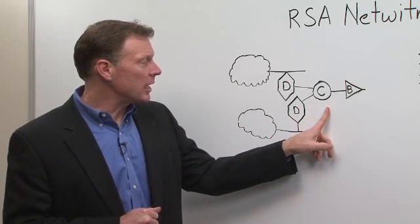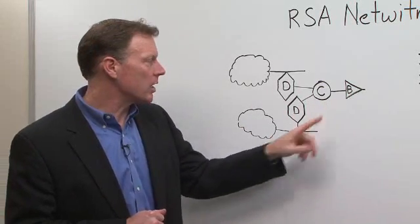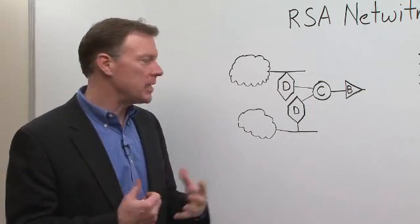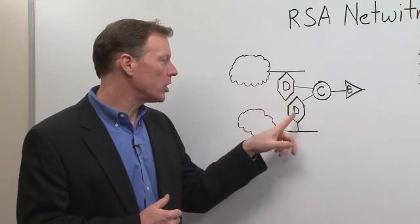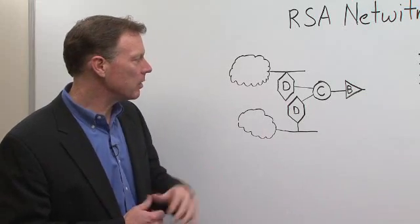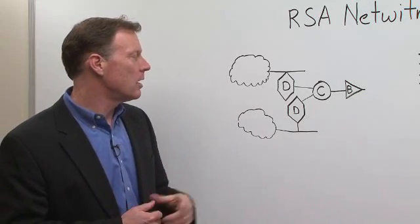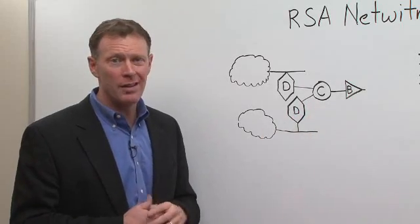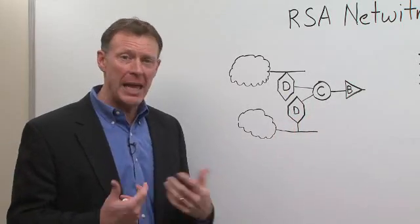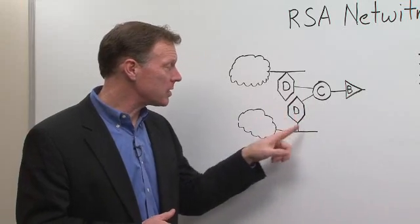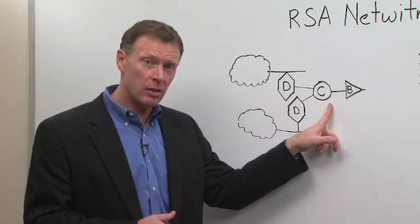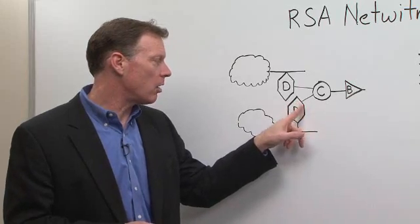The second device here, and again, this is an appliance, is a collector. The collector can aggregate metadata from multiple decoders. In this particular case, we've got two decoders. The collector will periodically pull that decoder, configurable, for metadata associated with what it's discovered here. It'll pull that metadata back to the collector here, and then delete the metadata off the detector.